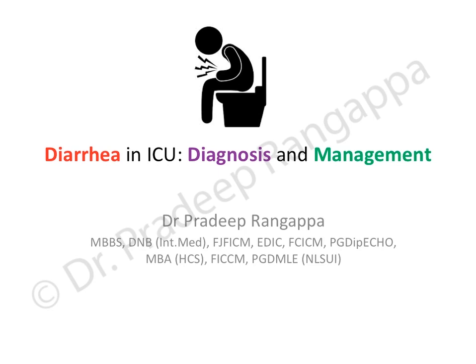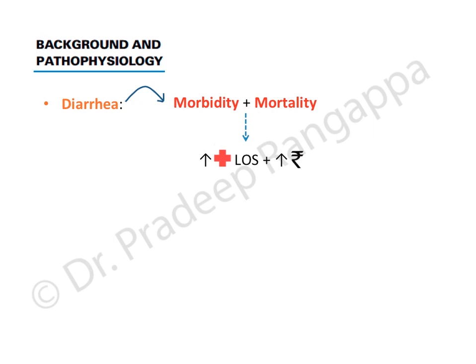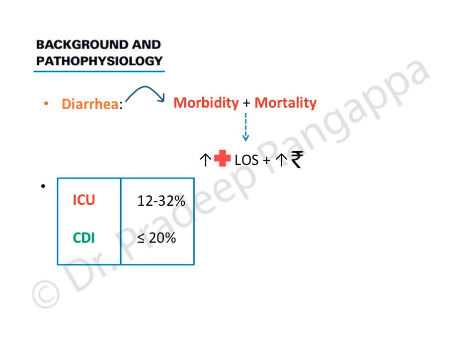It is good to have clarity on how we approach the causes and management. Diarrhea has a significant impact on morbidity and mortality in the ICU, increases hospital length of stay, and increases cost for a patient. The occurrence rate of diarrhea is around 12 to 32 percent of patients admitted to ICU.